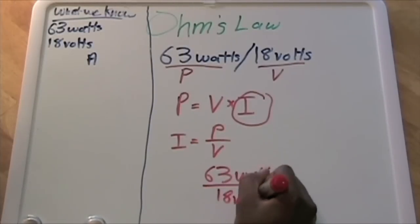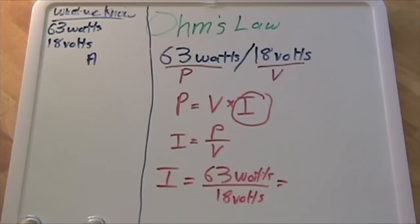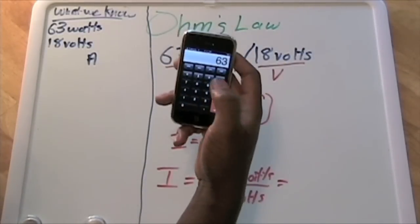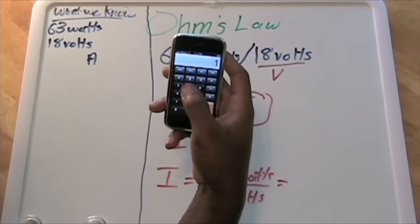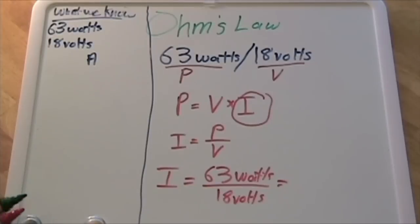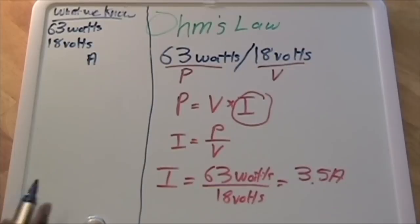Just putting that in our calculator—63 divided by 18 equals 3.5 amps. So I'm just going to write that over here. That's information we now know about it.